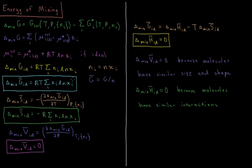This equation looks similar to the Gibbs entropy formula, and when we derive the ideal molar entropy of mixing it becomes even more familiar. Since S = −(∂G/∂T)_P, the ideal molar entropy of mixing is minus the temperature derivative of the molar Gibbs energy of mixing at constant pressure and moles. This gives: Δ_mix S̄_ideal = −R times the sum over all components of χᵢ ln χᵢ.